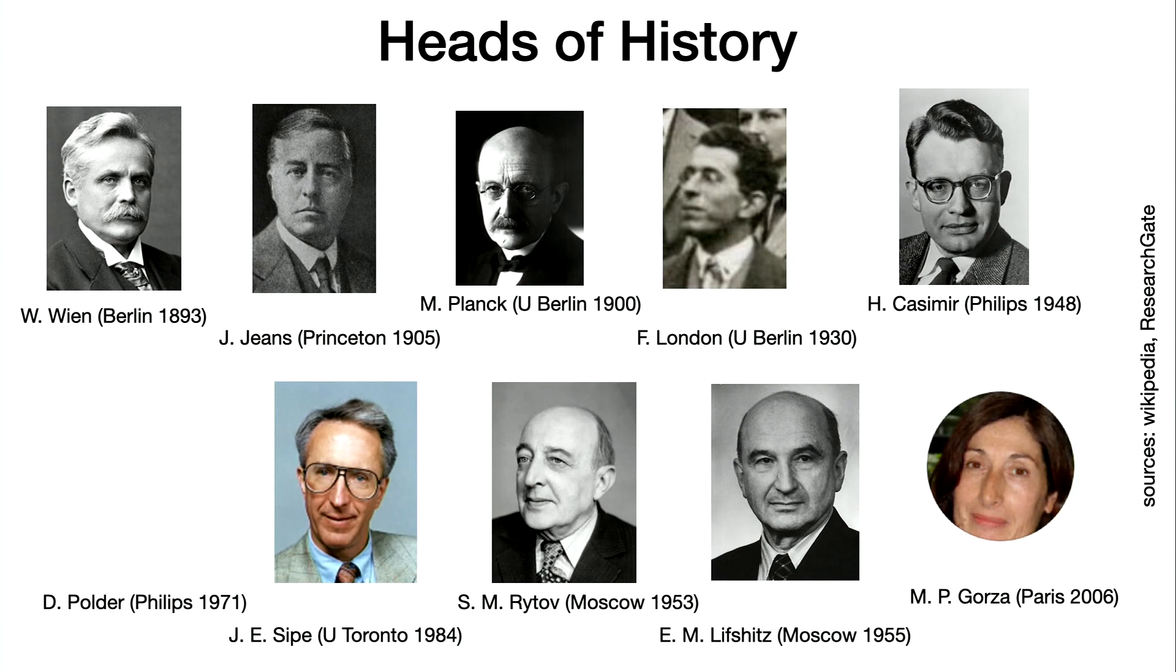Lifshitz was the Lifshitz of Landau and Lifshitz, and he took up the ideas of Rytov and developed them further. Here's the 2006 paper from Marie-Pascal Gorza in Paris, the only lady here on my tableau. She worked out something that should have been obvious since the papers by Seip, but she wrote it down in a careful way. How can we separate between equilibrium and non-equilibrium situations and how does the temperature of the light field come in a natural way?